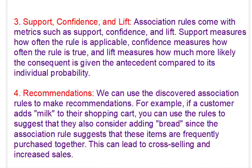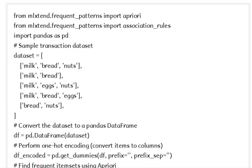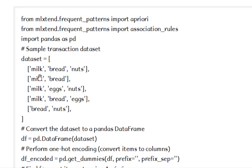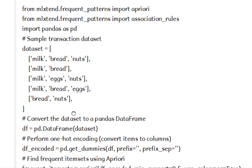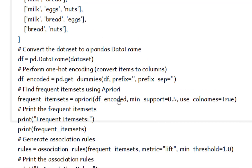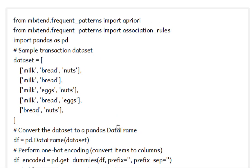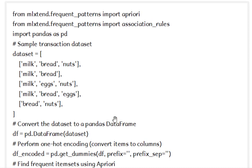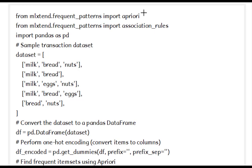That was the theory part. Now this is the Python program we will be using. The dataset includes transactions such as milk and bread, milk and bread, milk and eggs and nuts, milk and bread and eggs, and bread and nuts. I will share this code in the description section. This code demonstrates how to use the Apriori algorithm in the MLExtend library to find frequent item sets and generate association rules from a transactional dataset.